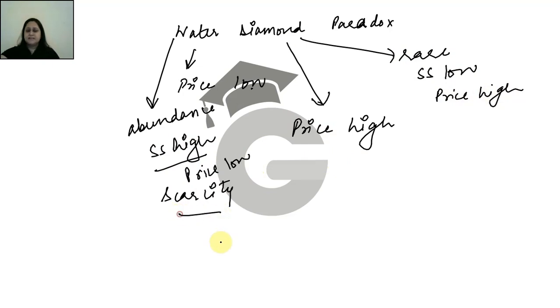The second is scarcity, which is the supply side. The other is marginal benefit, which is the demand side. Water is very useful.